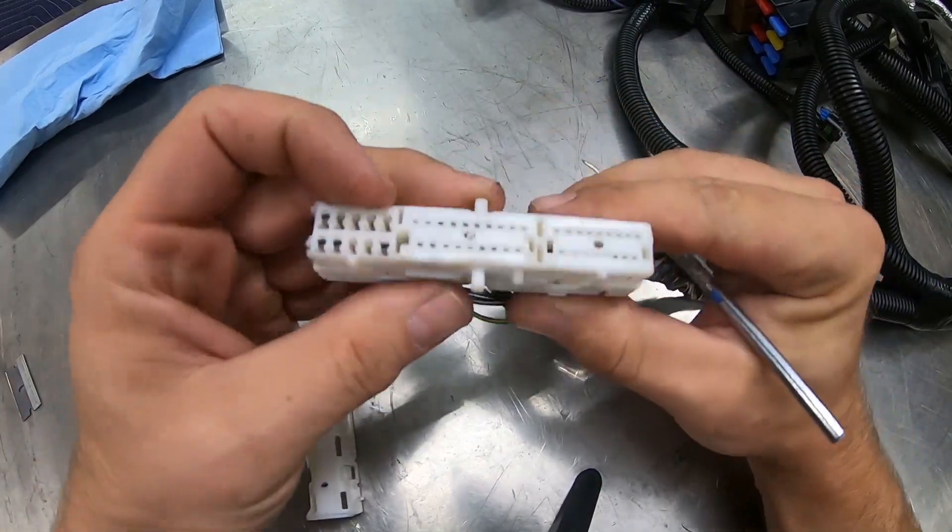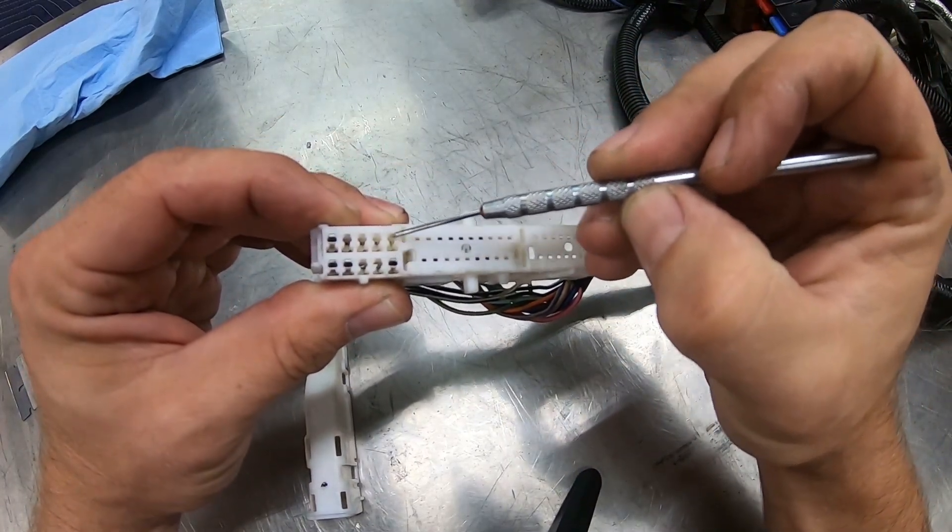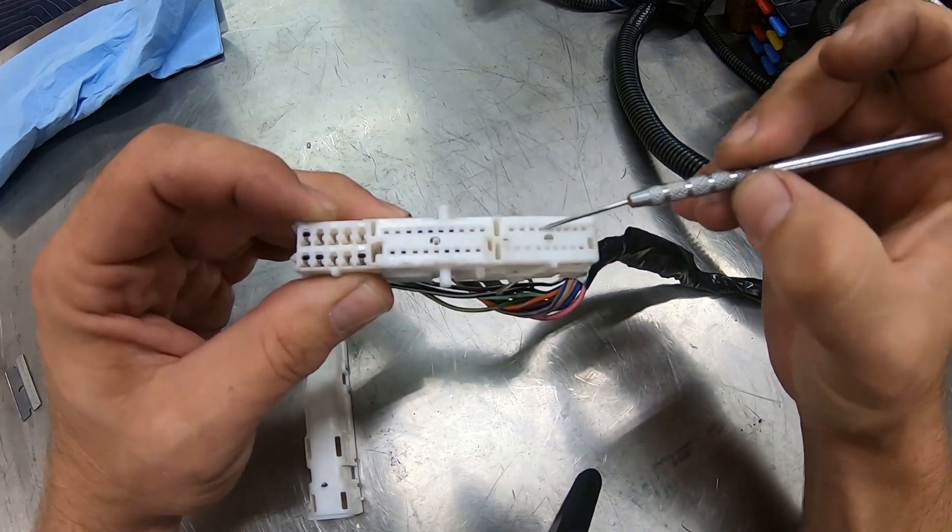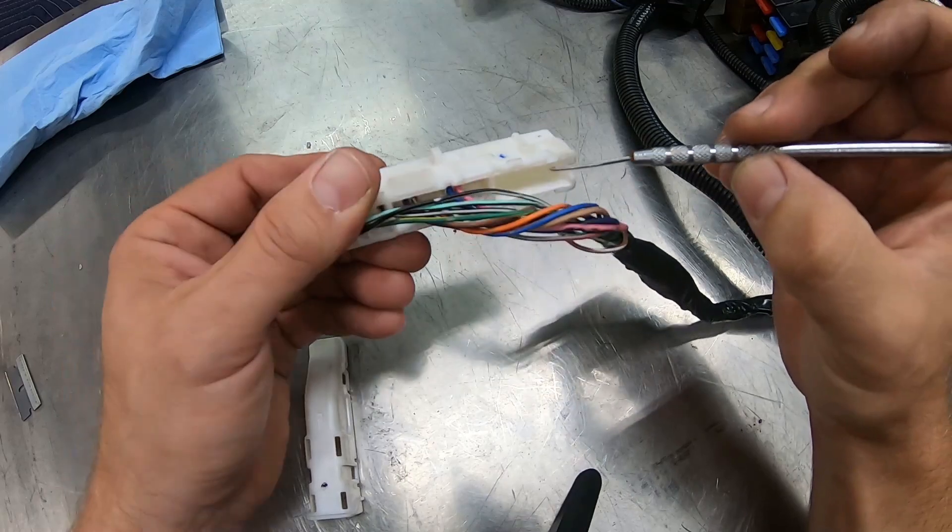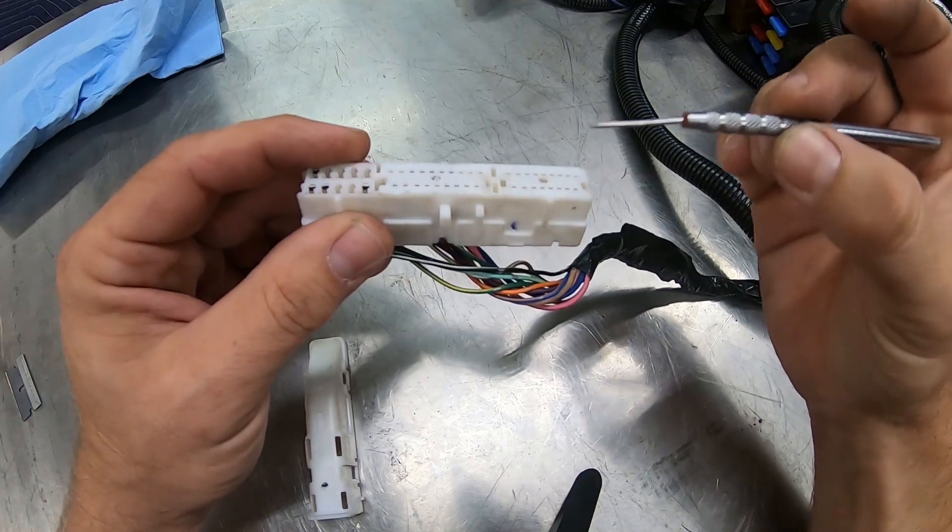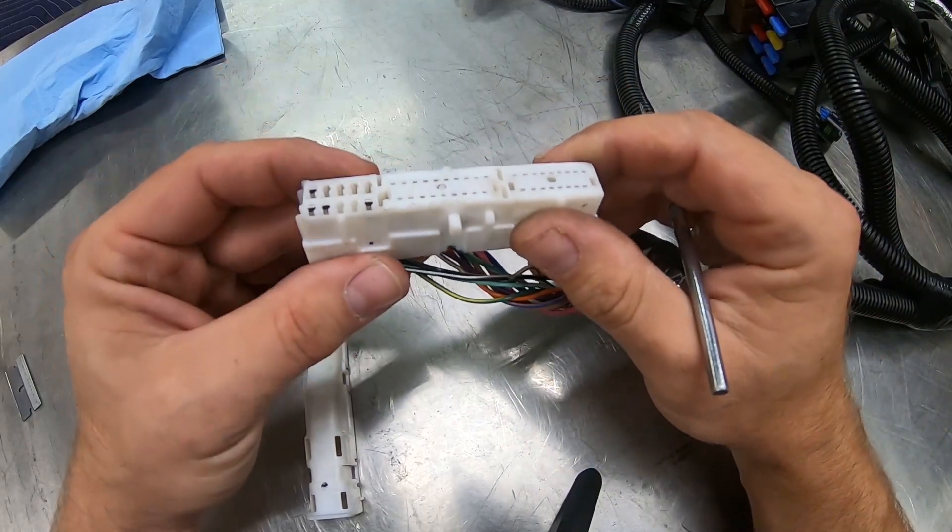Looking at this harness connector, there are 10 wires over here that are kind of larger sized terminals, then a bunch of small terminals here, and this end of the connector is actually empty, it's a void. It's empty both on the factory harness and after we make the modifications for using it on the 350Z G35 swap harness.